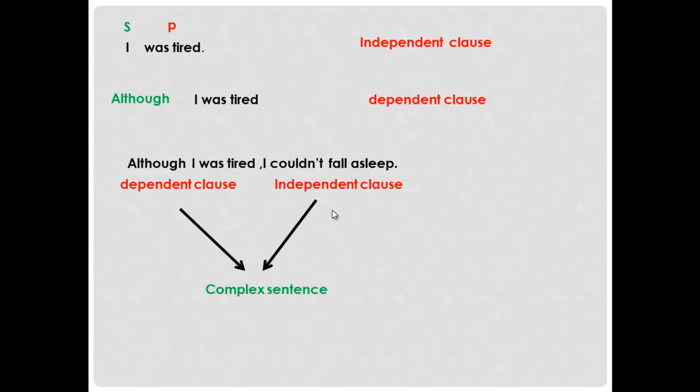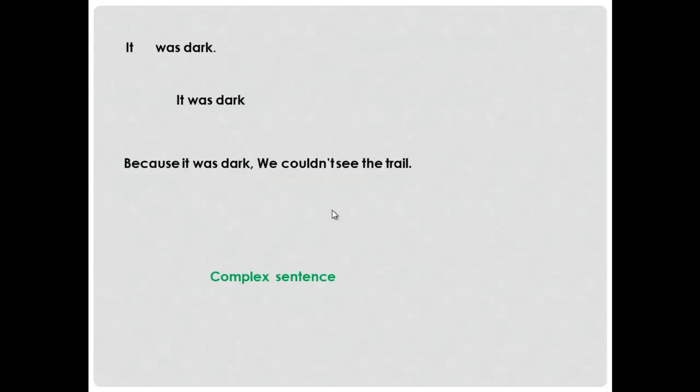Just notice: once you add a subordinate conjunction to an independent sentence, it becomes a dependent clause. Next example: 'It was dark.' Do you have a subject? Yes, 'it.' Do you have a predicate? Yes, 'was.' You have a subject and predicate and a complete meaning — 'It was dark.' I understood the idea, so it's an independent clause.